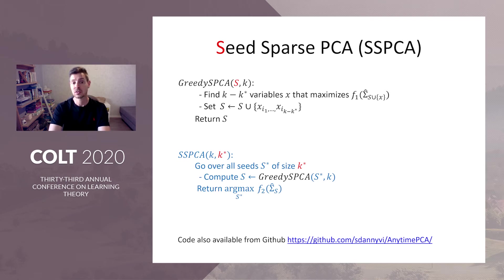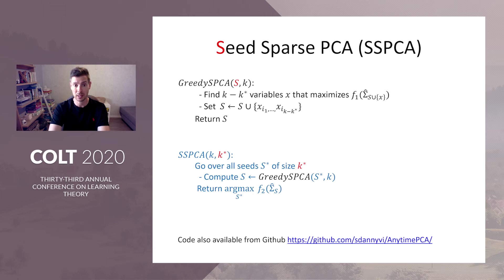The algorithm consists of two parts. There's an envelope routine called SSPCA which performs an exhaustive search, but not over solutions of size K — instead over solutions of size K-star, which we call SEEDs. K-star is smaller than K. So we go over all SEEDs of size K-star, each SEED is completed greedily, and then the best candidate solution is chosen and returned. F2 is the measure for the candidate solutions.